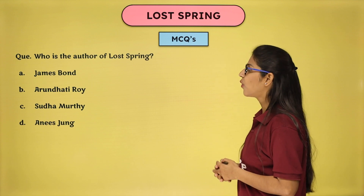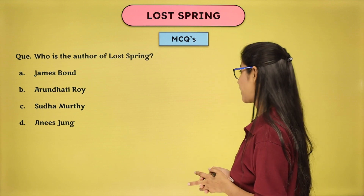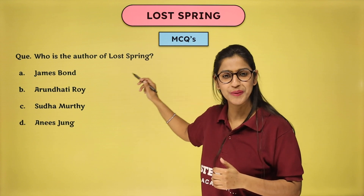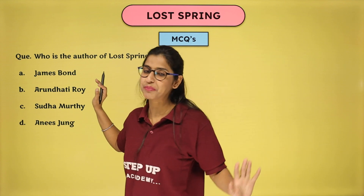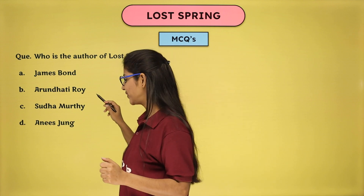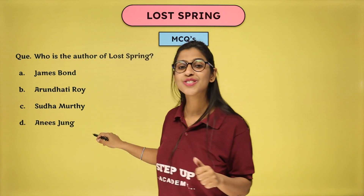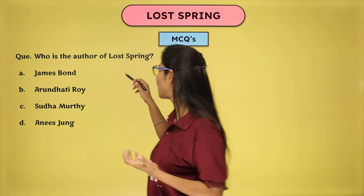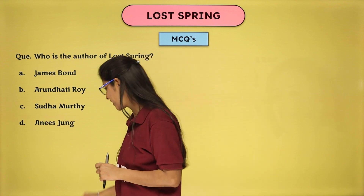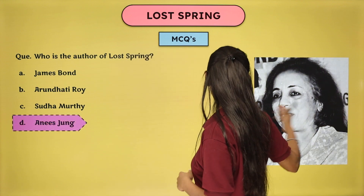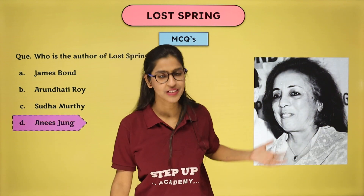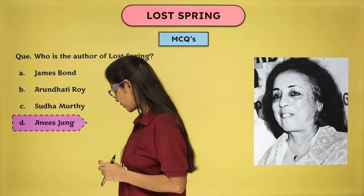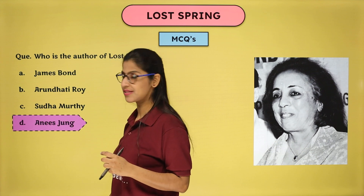Who is the author of Lost Spring? Lost Spring ke author kaun hain? Options: James Bond — oh, we have never read that name, such a chapter hasn't been studied in 12th class — Arundhati Roy, Sudha Murthy, Anees Jung. Yes! Anees Jung is the writer and author of the chapter Lost Spring. So here you go with Anees Jung — this is the picture of Mrs. Anees Jung, who wrote this chapter, that is Lost Spring.